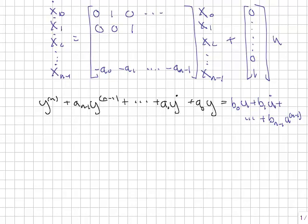Let's expand this matrix form a little bit further by adding in a more complicated input. So the input now is a function of u and all derivatives of u up to u n minus 1. I've chosen u n minus 1 so that the system is a realizable system. That is, the order of the numerator is 1 less than the order of the denominator in a transfer function.